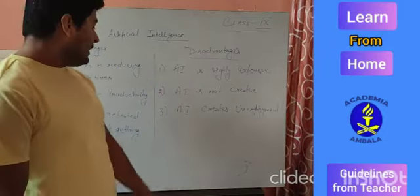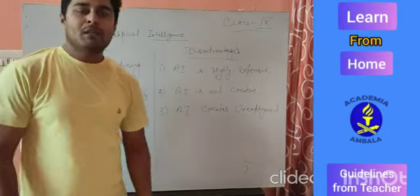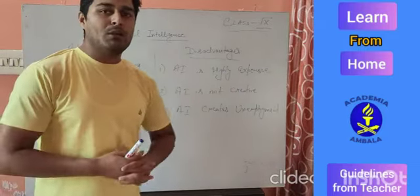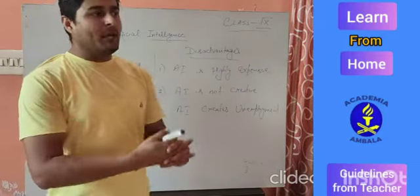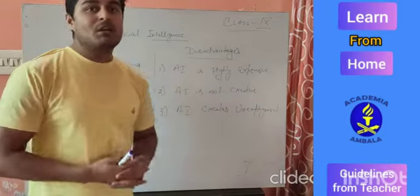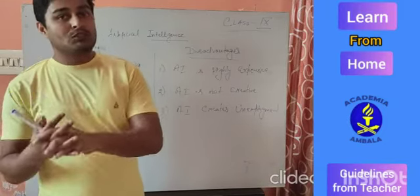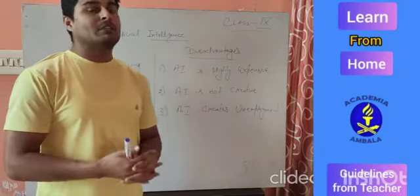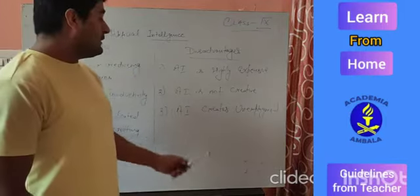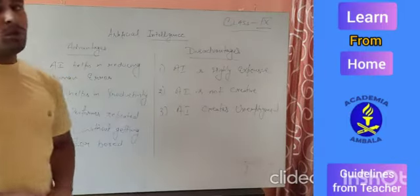Point number three: AI creates unemployment. In real times, a lot of people used to do the same kinds of tasks, but currently machines are doing those same tasks. So those particular humans are totally unemployed. Artificial intelligence also creates unemployment.